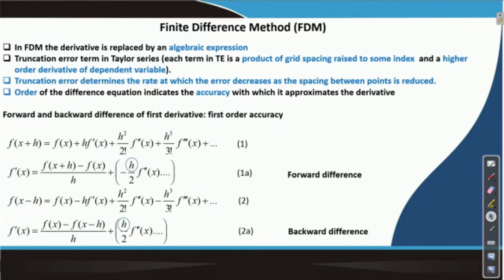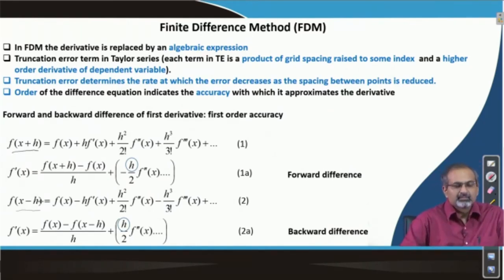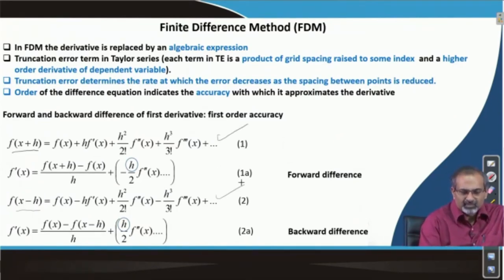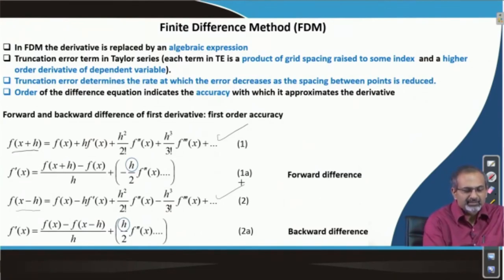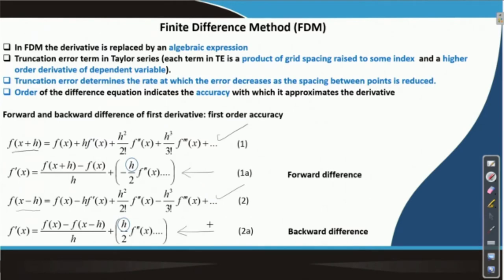We realized that Taylor series can be written for both directions. If you are expanding about a point x, it could be x plus h and it could also be x minus h, where h is a small distance. We derived both these expressions for f(x+h) and f(x-h), and by rearranging, we derived expressions for f'(x) for two different cases — what we call as the forward and the backward difference.